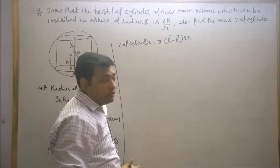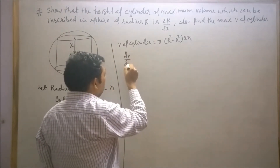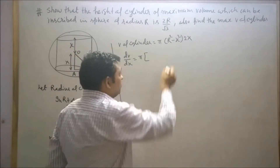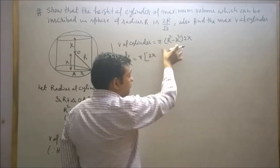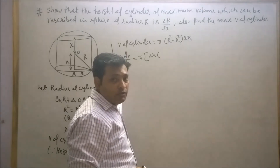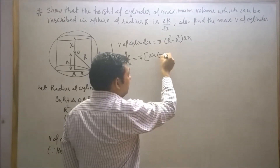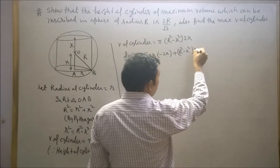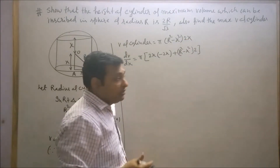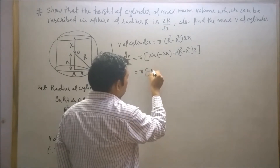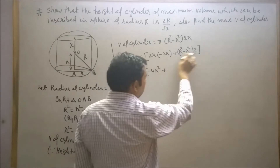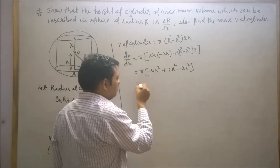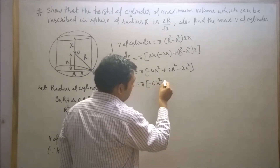Now differentiate the volume equation with respect to x using the product rule. So dV/dx equals 2π times: 2x into the differentiation of the first part. Since capital R is constant, its differentiation is zero, giving minus 2x squared, plus (R² − x²) into 1. Simplifying: minus 4x² minus 2x² plus 2R² equals minus 6x² plus 2R².